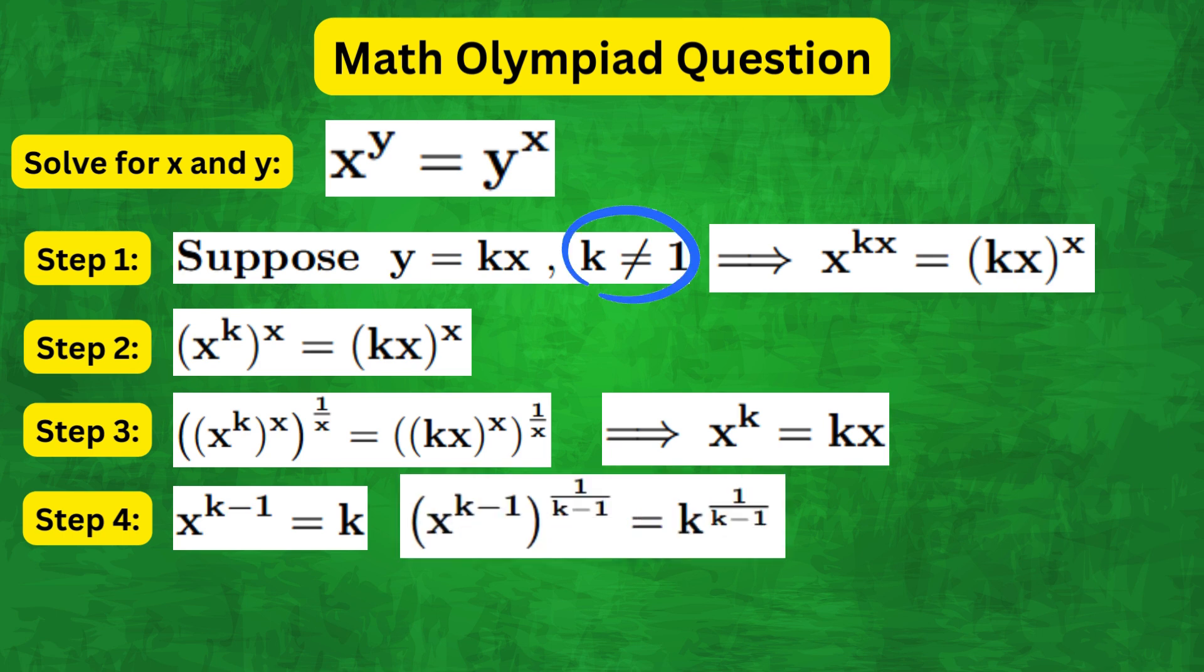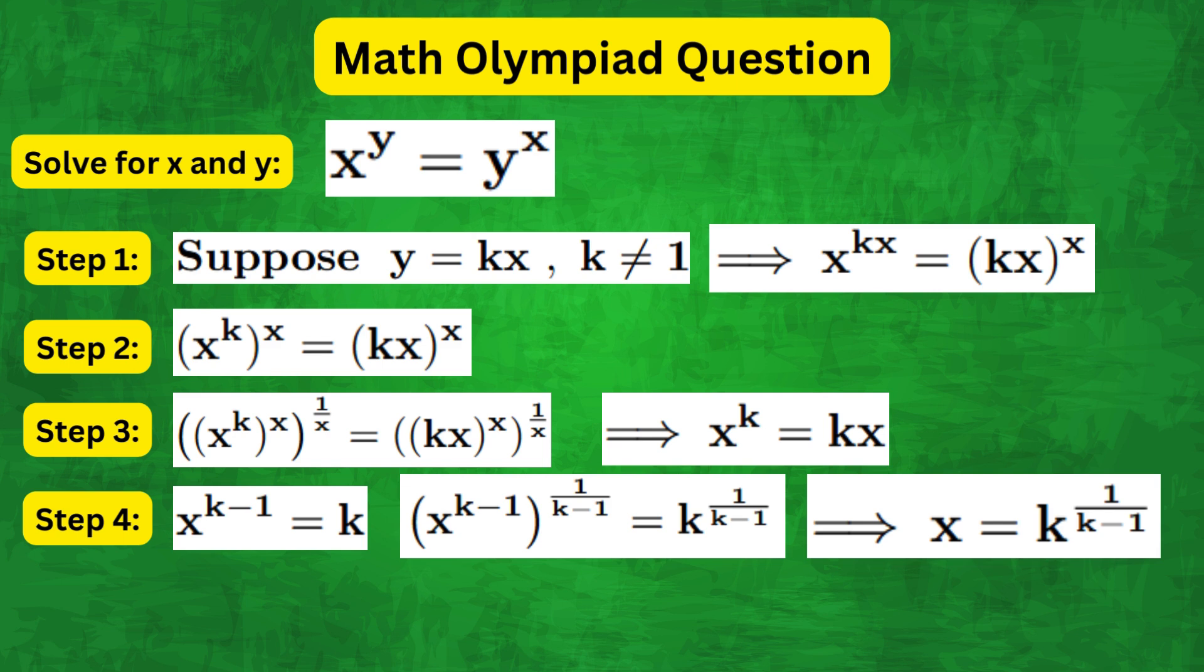Then taking 1 over k minus 1 as a power on both sides, we get x equals k to the power of 1 over k minus 1.